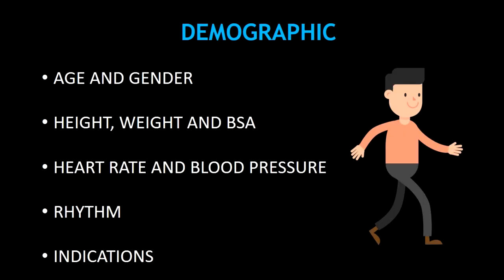Starting with demographics and other relevant data, age and gender are essential in your ECHO report. Height, weight, and body surface area are ideal and essential when indexing volumes and effective orifice areas. Heart rate and blood pressure are also included.